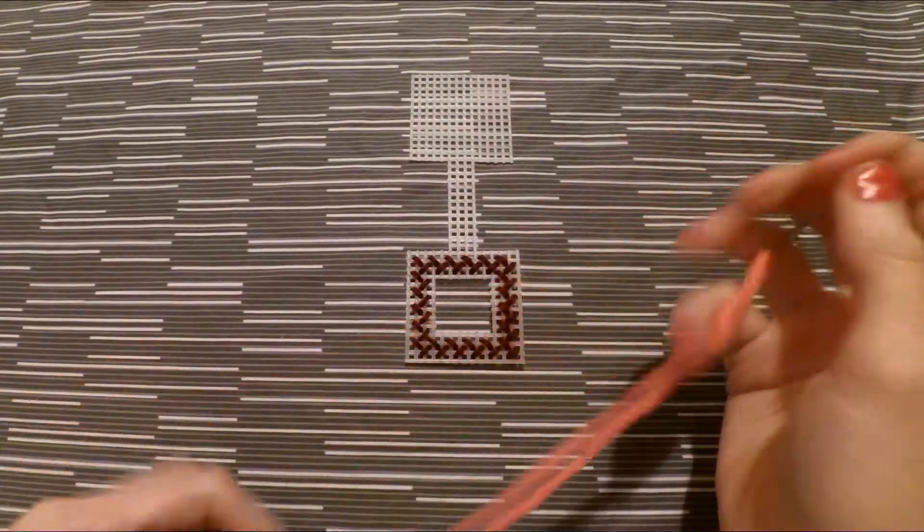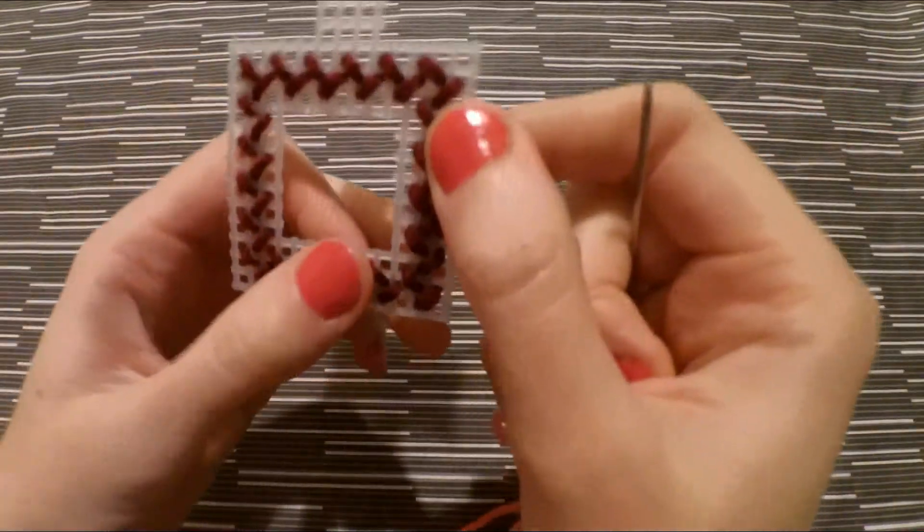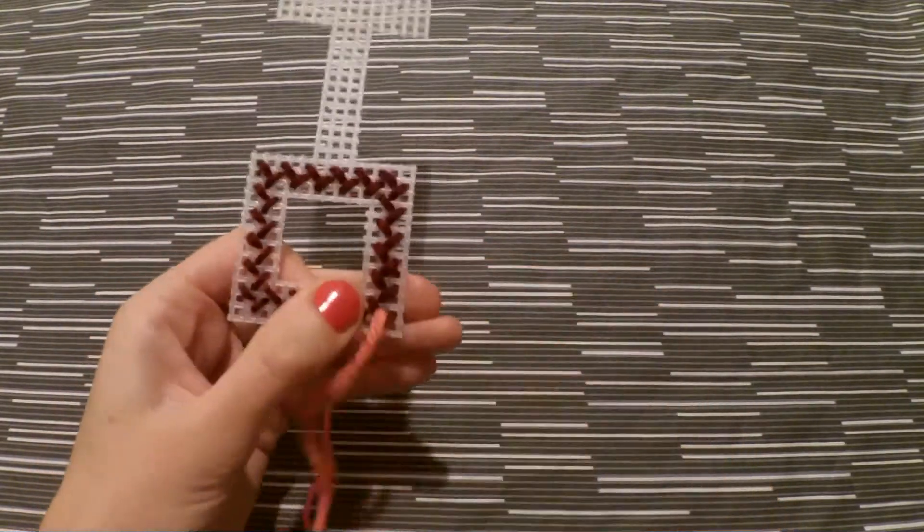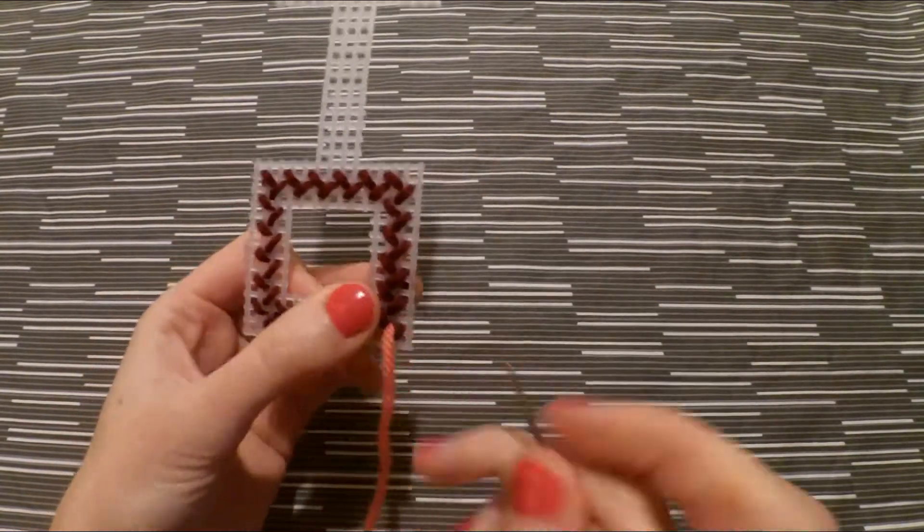Now you're going to thread your needle with your second color and you're just going to fill in the empty spaces that we left behind working with the first color and just do that all the way around.